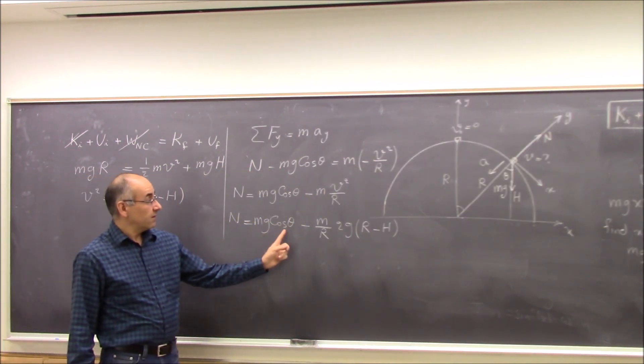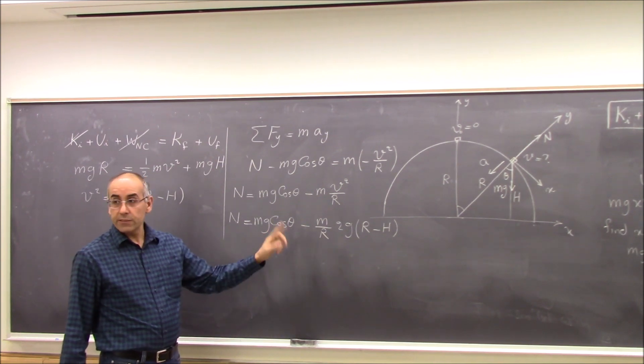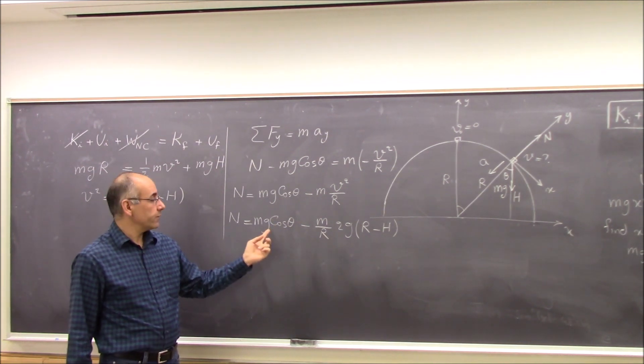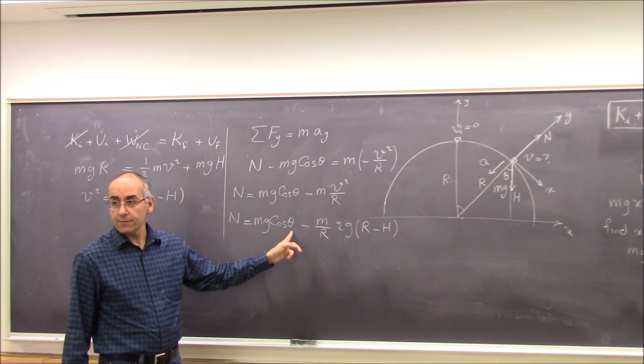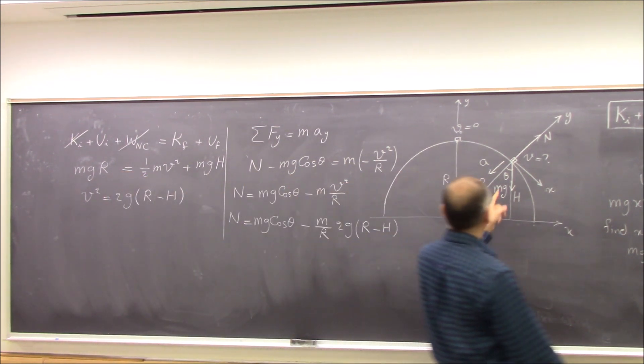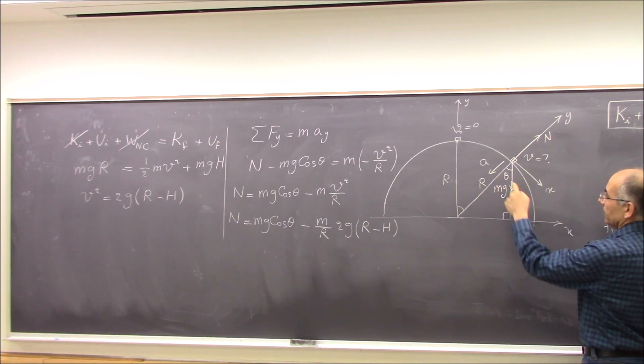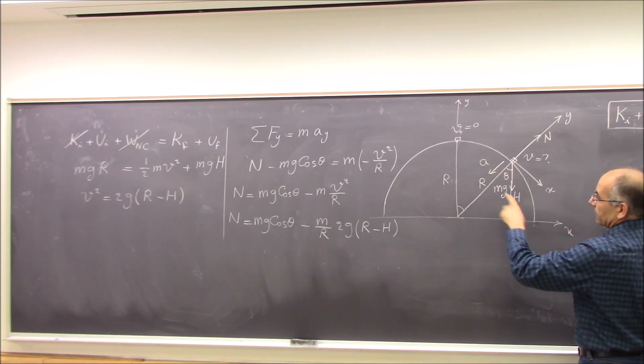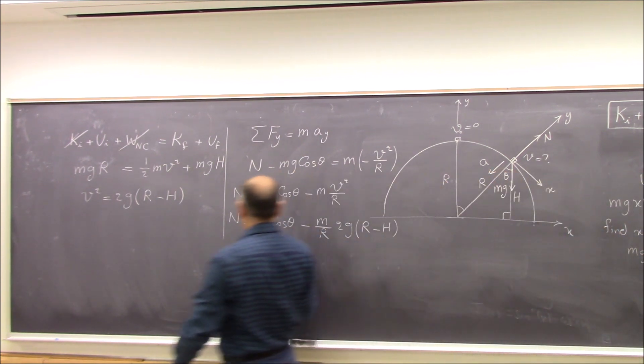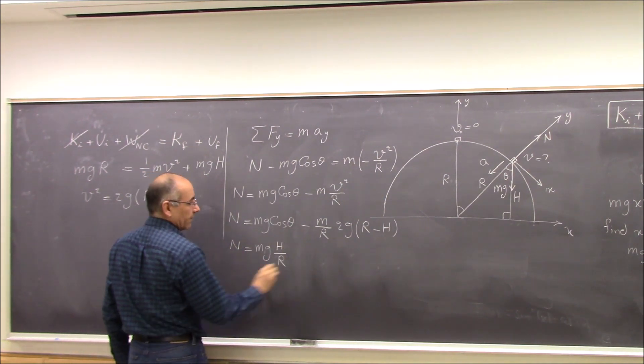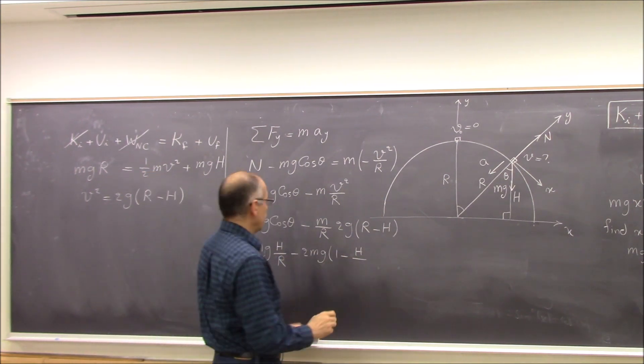And now theta is related to H and R also. How is cosine theta related to H and R? It's H over R. Yeah, cosine theta in this right triangle, cosine theta is adjacent over hypotenuse, which is H over R. So I have N equal to...